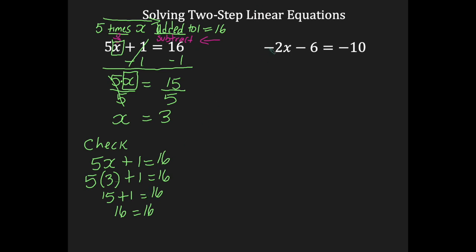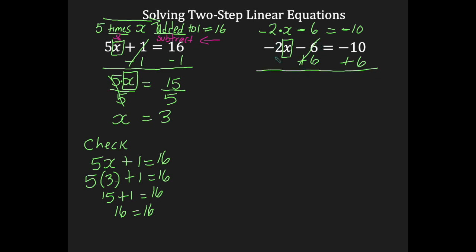Let's try another example. Here I have negative 2 times x, subtracting 6, equals negative 10. All operations are again on the left-hand side — multiplication and subtraction. I'm going to put a box around my x. That box tells me not to touch the negative 2, so I have to get rid of the 6. The 6 is connected by subtraction, so the opposite would be addition. We're going to add 6 — opposite of negative 6 is positive 6 — and put it on both sides. This is eliminated; bring down negative 2x equals. Signs are different, subtract. Because 10 is bigger, my answer will be negative 10.